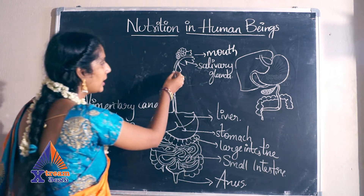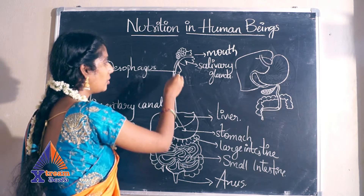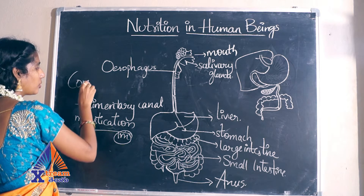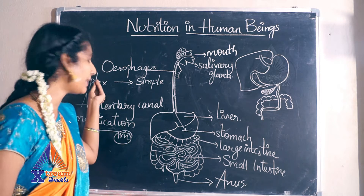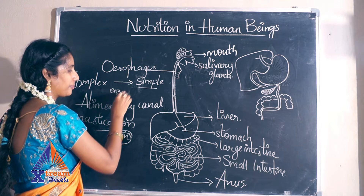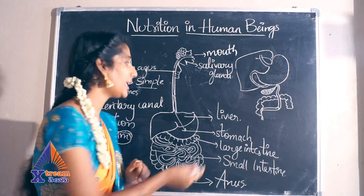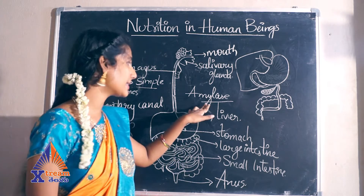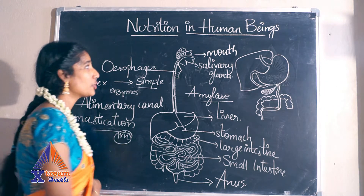In the mouth, the food is converted from complex to simple substances. The food we intake is complex, and it is converted into simple substance by using enzymes. The main enzyme used here is amylase, also called ptyalin. This amylase enzyme helps in converting the complex substance into a simple substance.